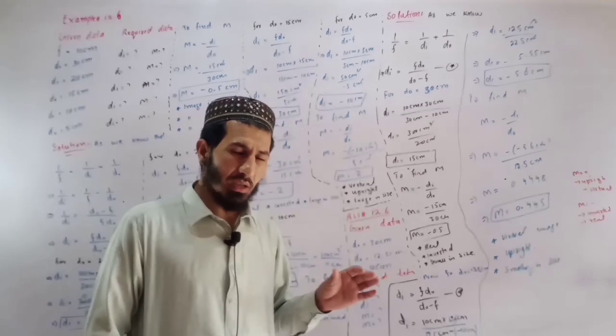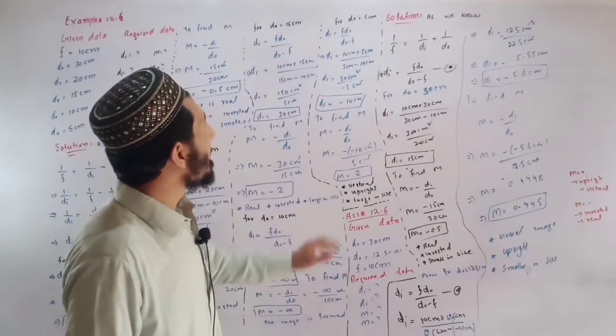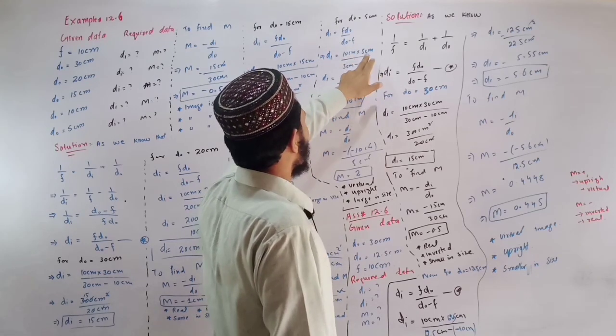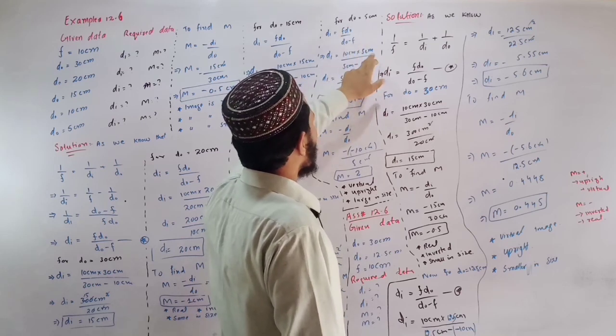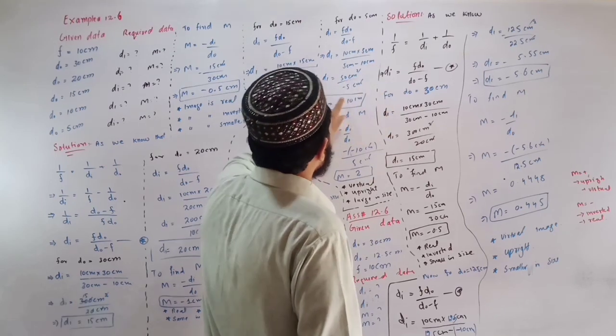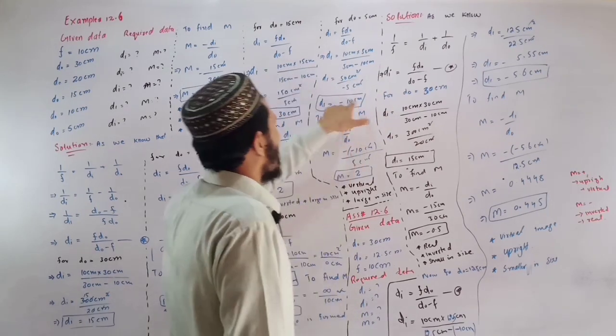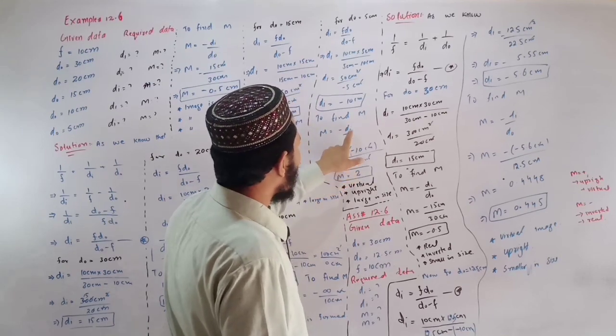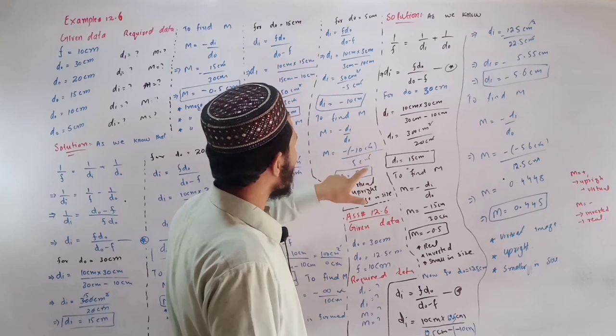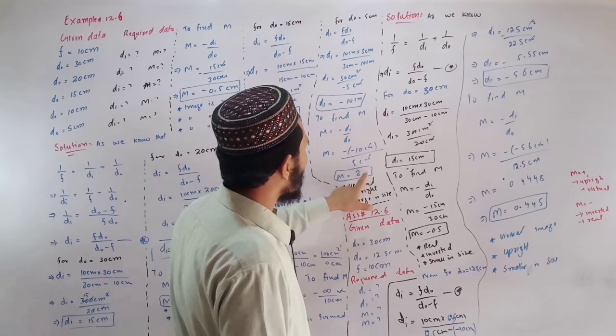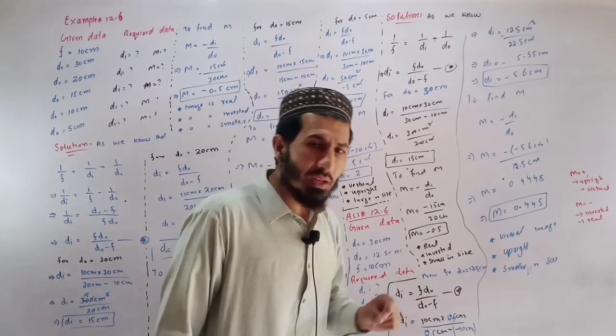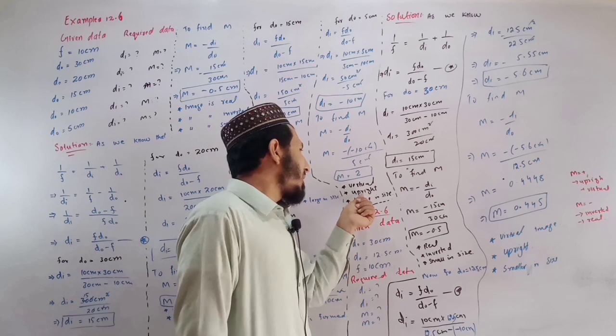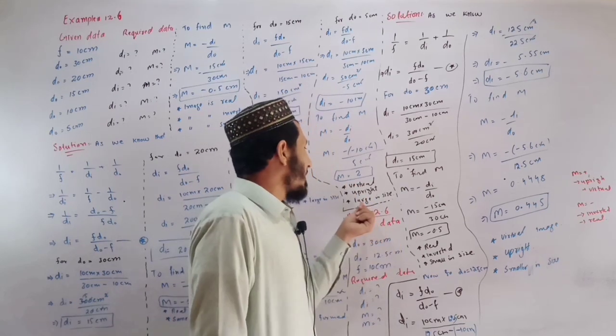d0 is 5 cm, di equals f times d0 divided by d0 minus f. Di equals 10 cm times 5 cm divided by 5 minus 10 cm, which is minus 10 cm. The virtual lens, magnification, which is larger in size.